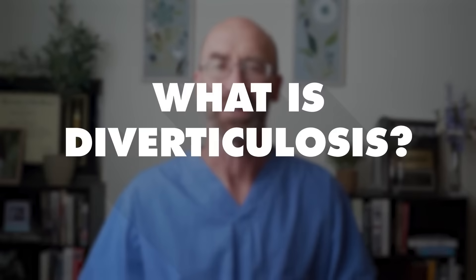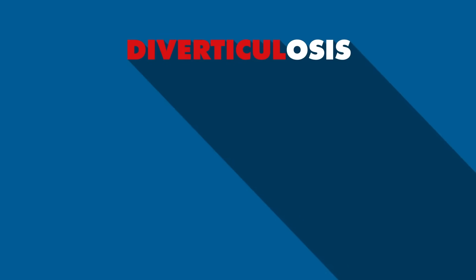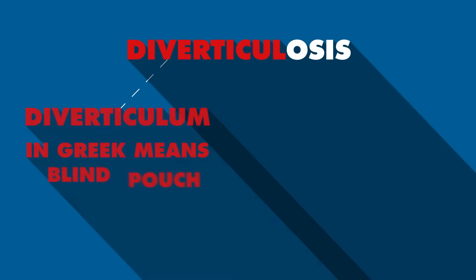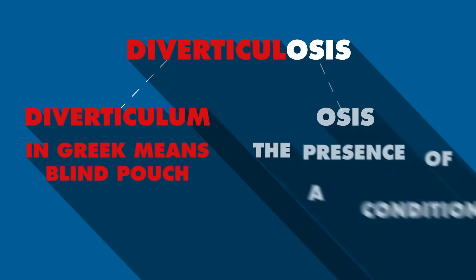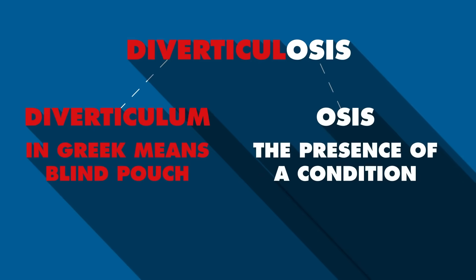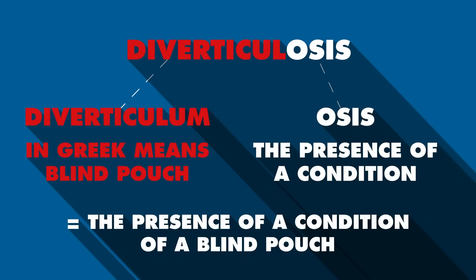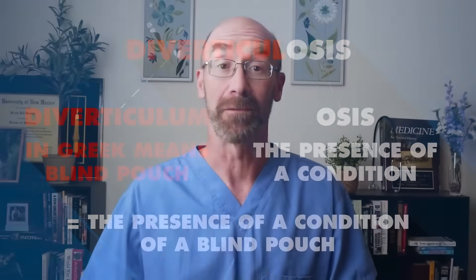What is diverticulosis? The word origin is diverticulum, which in Greek means 'blind pouch,' and -osis, which means 'the presence of a condition.' So it means the presence of a condition of a blind pouch. Diverticulum is singular and diverticula is plural.